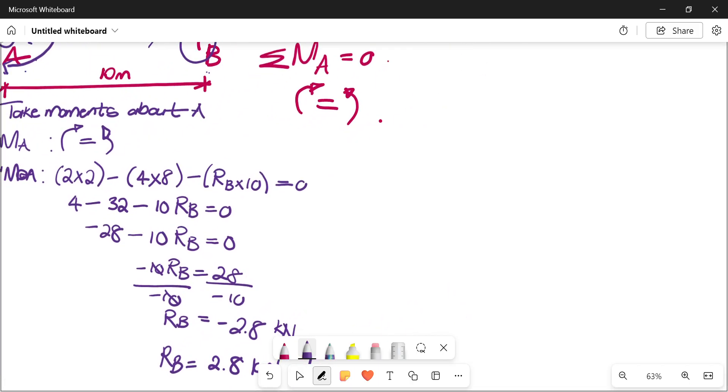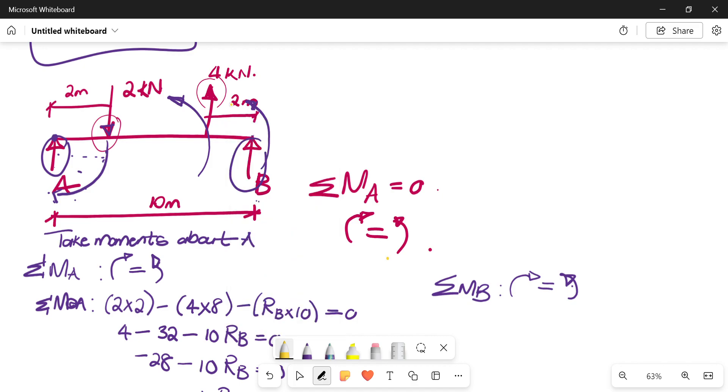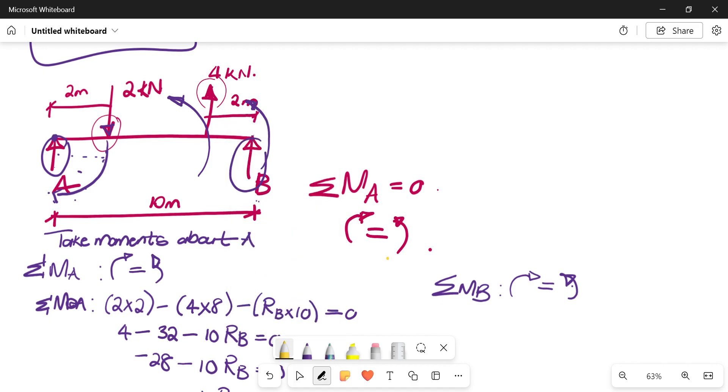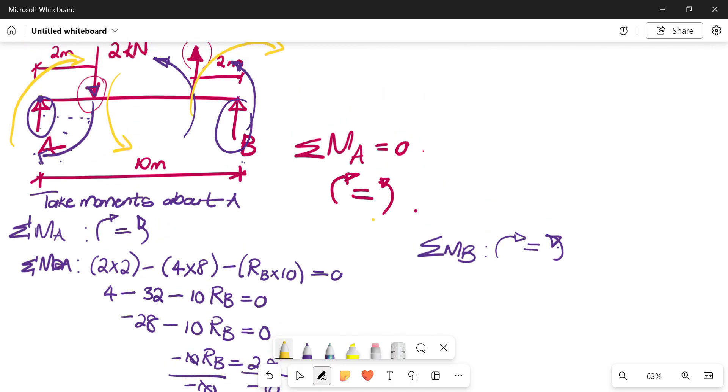Then similarly to that, we take moments at B and we say clockwise is equals to anticlockwise, okay? So when you're taking moments at B, right, you're standing at point B. And then you're checking the effect of the rest of the forces when you're standing at point B. So when you're here, let me try a different color. I want like a yellow. Okay, so when you're standing at point B, point A pushes in a clockwise manner. Your 2 kilonewtons pushes it down in an anticlockwise manner. Your 4 kilonewtons pushes it in a clockwise manner. Does it make sense? I really hope it makes sense.